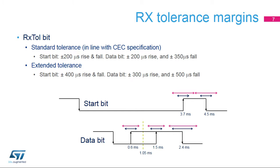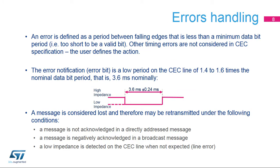The second mode is an extended tolerance mode, where the timing for the start bit is extended to plus or minus 400 microseconds for rise and fall transition, plus or minus 300 microseconds on the rising edge of a data bit, and plus or minus 500 microseconds on the falling edge of a data bit. A received data bit, excluding the start bit, is considered invalid if the period between the rising and falling edge exceeds the tolerance margins as defined by the HDMI CEC specification.